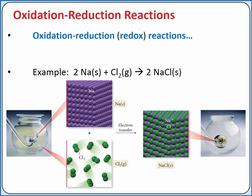In an oxidation-reduction reaction, or redox reaction, one or more electrons are transferred from one species to another. For example, in the reaction of sodium metal with chlorine gas to produce sodium chloride salt, electrons are transferred from the sodium metal to the chlorine atoms to create ions which are held together in the crystal lattice by electrostatic forces. The relatively simple act of transferring electrons can completely change the physical and chemical properties of the substance.